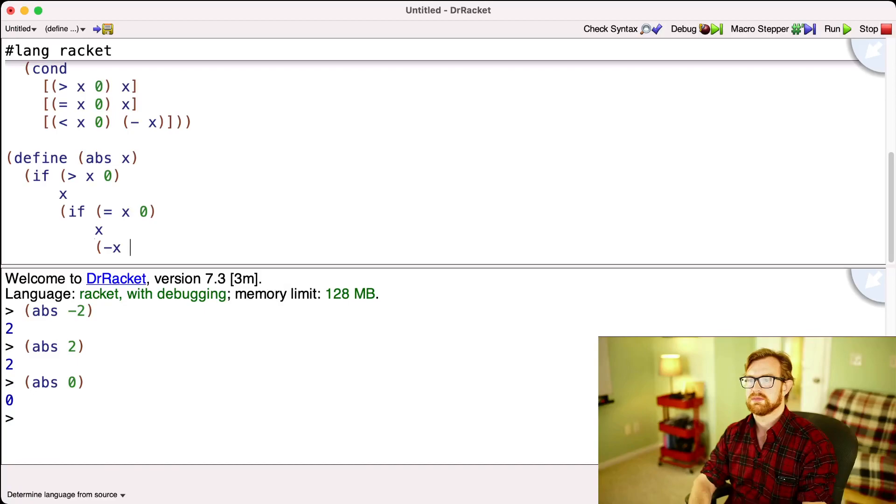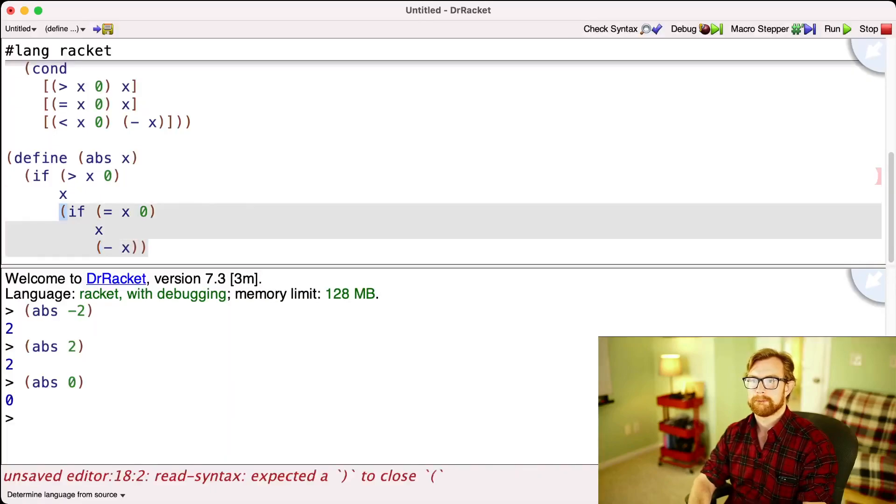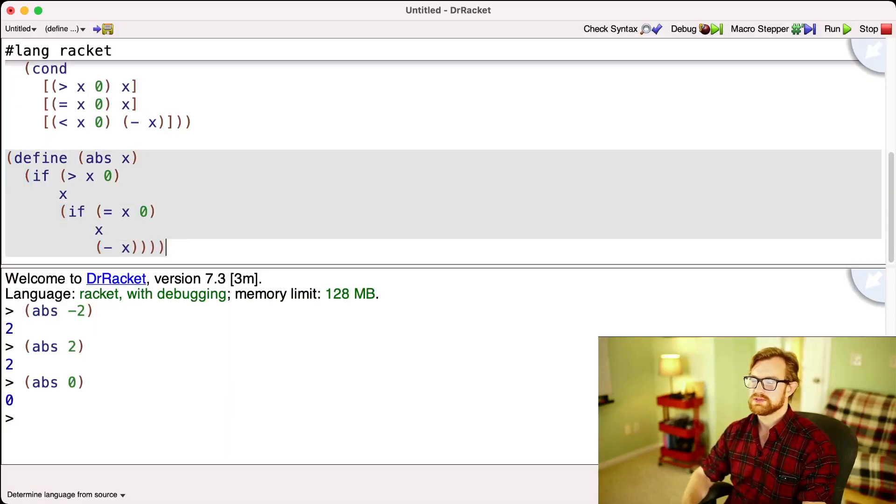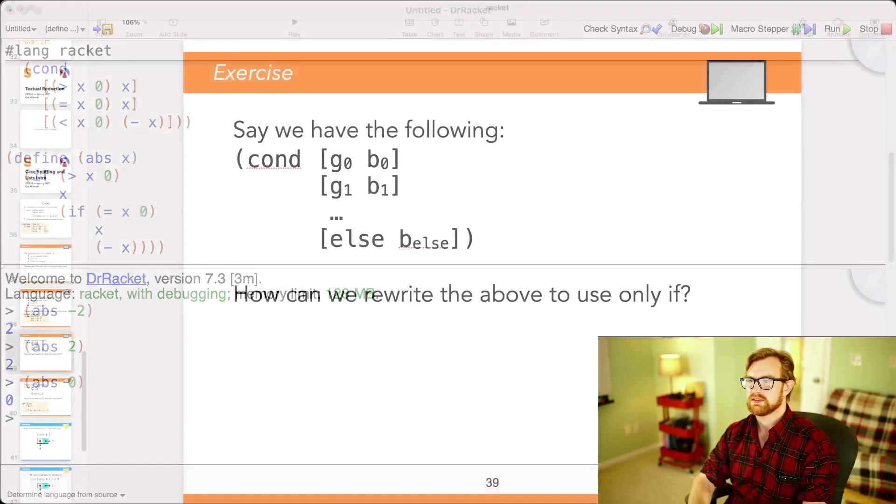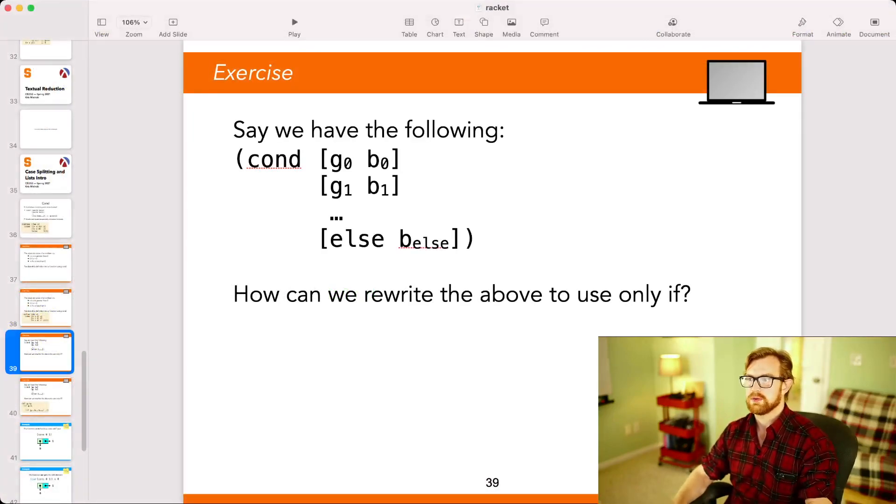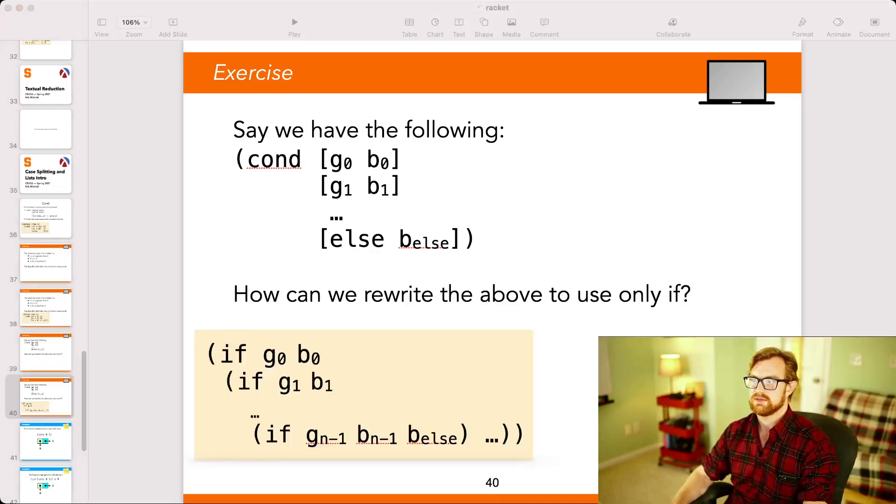So then we'll say it's minus x. And you can sort of see how we can systematically transliterate back and forth between cond and if. So in general, I can always get away with just using if as long as I have access to if I can always translate cond into if. And this is one of the first examples of macro expansion. So this is a way in which racket is kind of giving you access to cond, but all you really need is the more primitive form.